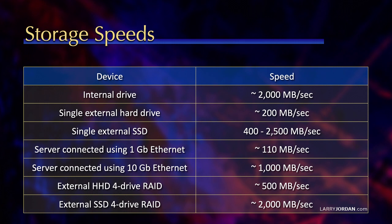If you connect a server using one gig ethernet, you're limited not by the speed of the server, but by the speed of one gig ethernet — to about 110 megabytes a second. This is a fraction of the speed of even a single spinning hard disk, not because the server is slow, but because one gig ethernet is slow.